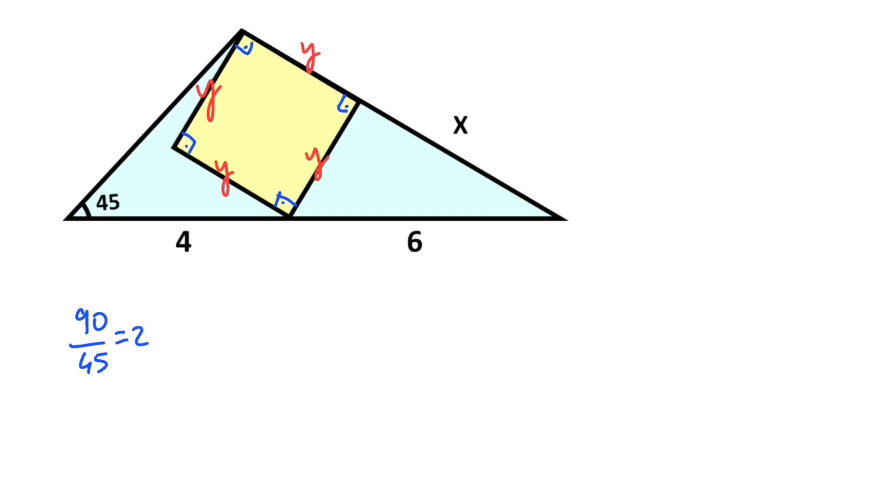That means if we draw a circle like this, let's call here O - O is the center of the circle. Let's connect here. That means y must equal the radius of the circle. Notice that if the radius is perpendicular to the line, the circle must be tangent to the line.